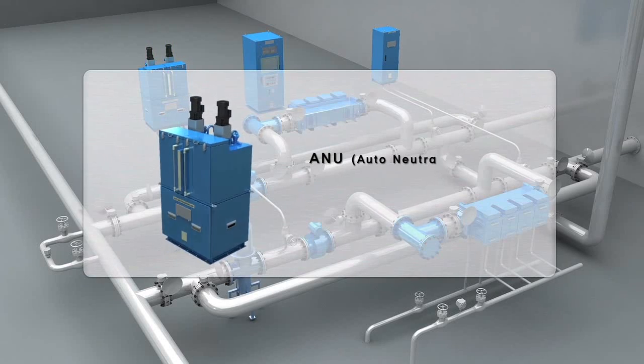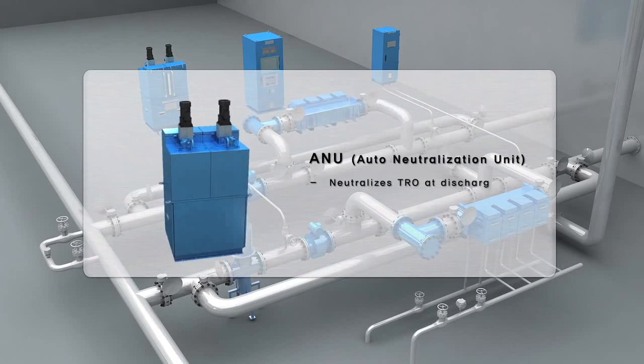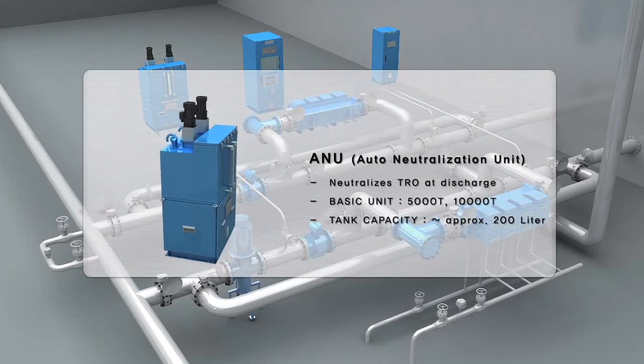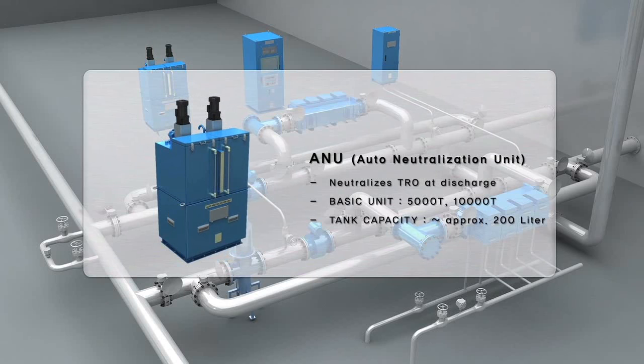ANU is designed to neutralize any remaining residual TRO prior to discharge. It is used during deballasting and stripping only.